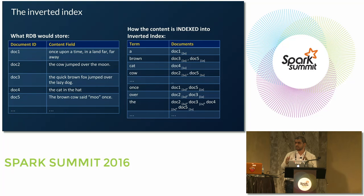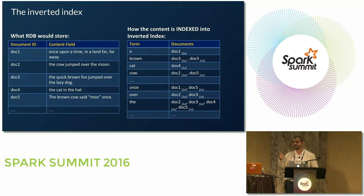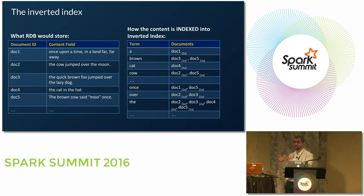In the inverted index, we use the term inside the document as a key, and another column to store a list of documents where that term appears. Think of it as a huge giant hash table, where the key is the term or token from the document, and the values are the list of documents where that token appears. This is why search engines and recommendation engines utilize inverted index — it's extremely fast. The retrieval time is O(1): you go to 'brown', pull all documents, go to 'cow', pull all documents, do intersection, retrieve results.